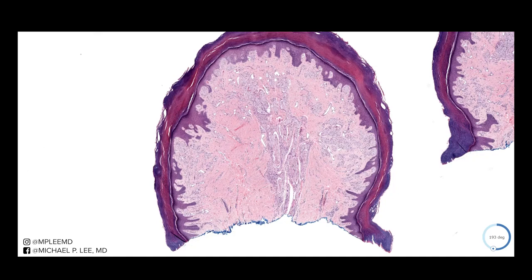Good morning, everybody. This is Dr. Lee with another episode of DermPath Made Easy. We're going to go along with our theme this week of polypoid lesions in the skin. We've already talked about accessory tragus, we've talked about accessory nipple, and today we're going to talk about accessory digit.